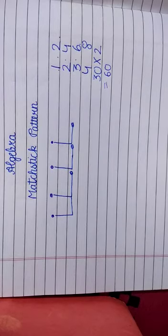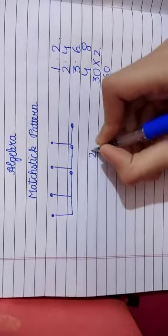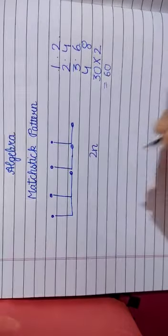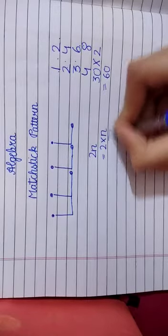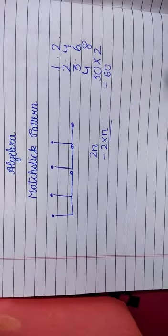So, this thing is giving us a rule or formula here which is 2N. Now, what is 2N? 2N means 2 into N. N is a variable here. Now, what is variable?